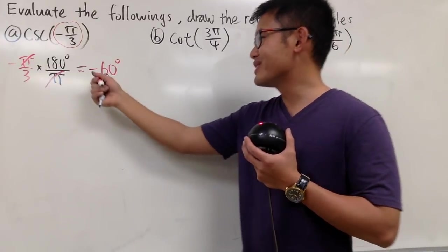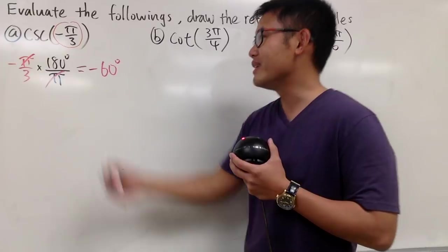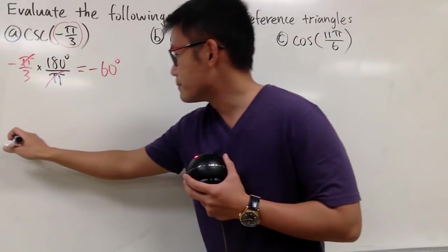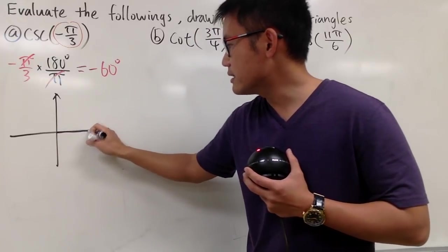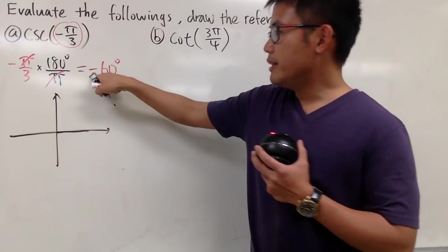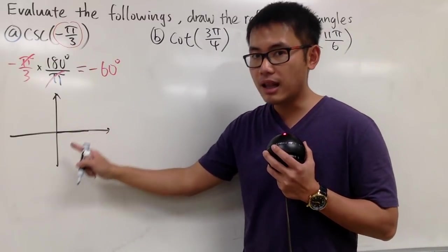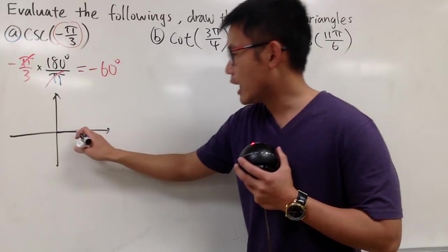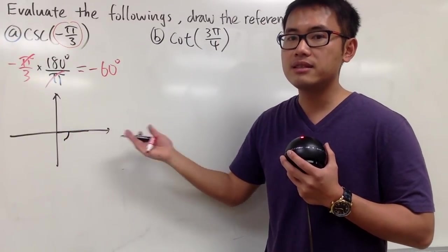Now we can look at this negative 60 degrees and draw the picture. Here is the picture. We're starting off with the positive x-axis, and this time the angle is negative, so that means we have to turn clockwise. I would just turn this much, let's say that's negative 60 degrees.